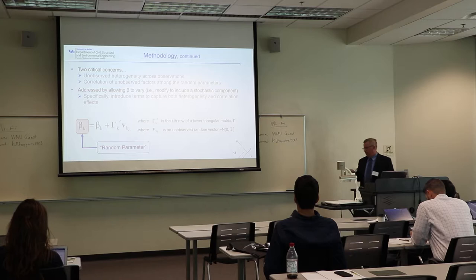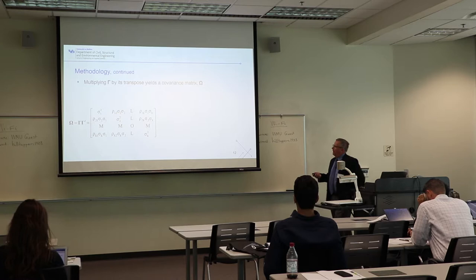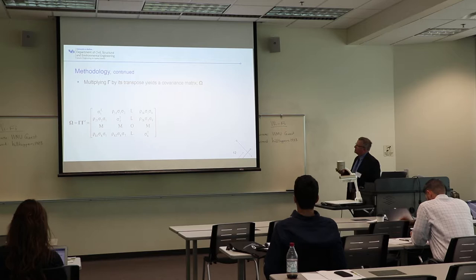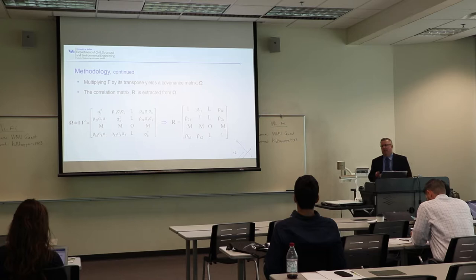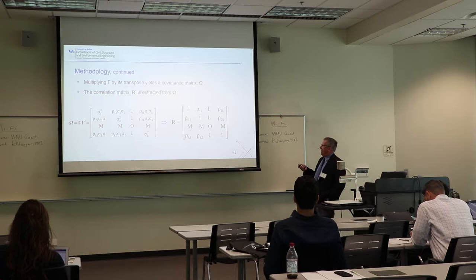We take the gamma matrix, multiply it by its transpose, and it yields a covariance matrix. We use that to get our correlation matrix — these are the unobserved correlations in the stochastic component between our random parameters. In this case, it's the correlation between random parameter one and random parameter two.